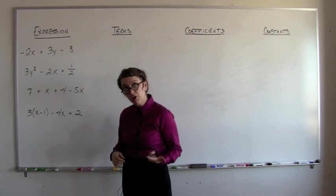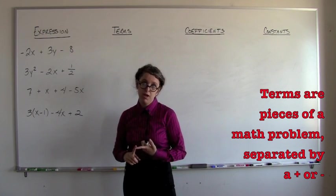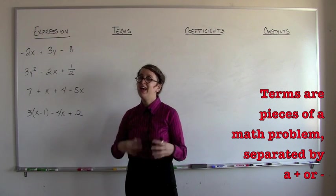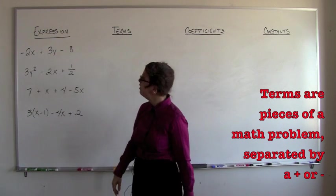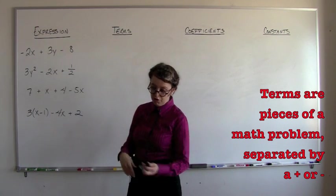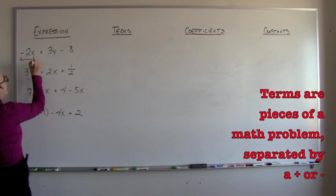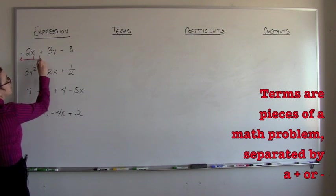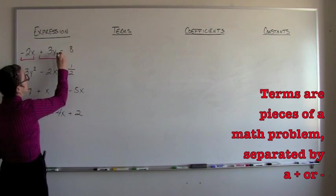So let's start with this expression up here on the top. An expression is made of terms. Terms are pieces of math that are separated by a plus or minus sign, and they can be bound up in times. So with this expression right here, we've got three terms. The first one is negative 2x, the second one is positive 3y, the third one is negative 8.